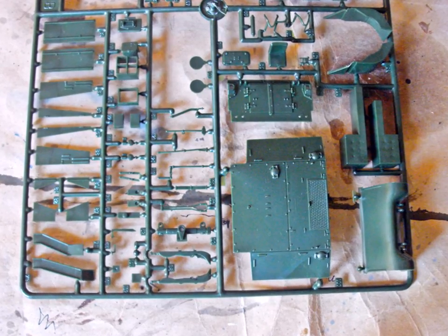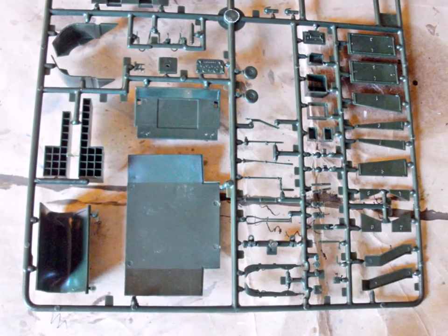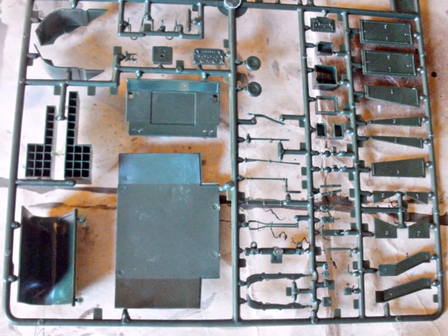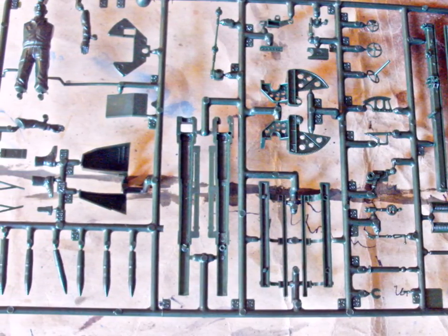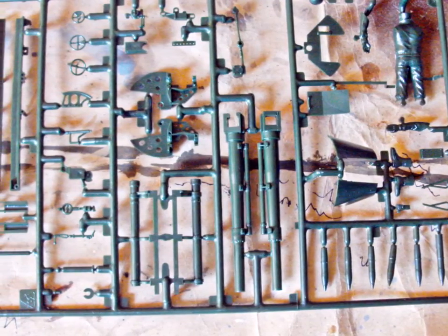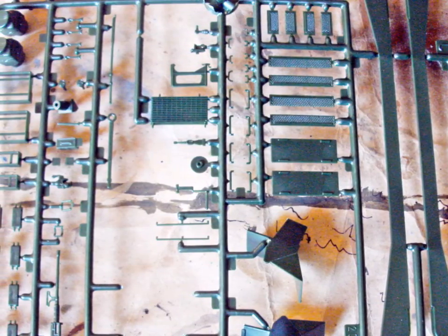Even the smaller exterior parts are in very good shape. The sinkholes on the underside of the grenade racks don't bother me at all. Nobody will ever see them again. Here you can see all parts for the gun assembly, and some more exterior parts. The side skirts won't be used.